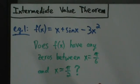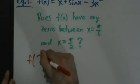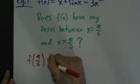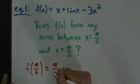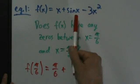Now we just check the value of the function at these two points. So we check f(π/6) = π/6 + sin(π/6), which is 1/2, minus 3 times (π/6)².